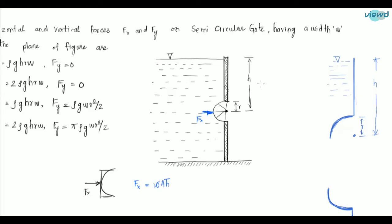FX = ρg × (projected area) × H̄. The projected area of this semicircular gate is 2R × W, since the gate spans 2R in height and W in width. So FX = ρg × 2R × W × H, which gives 2ρgRWH.